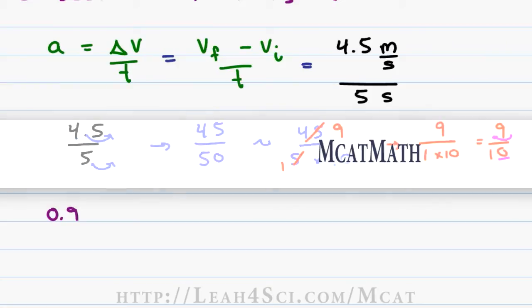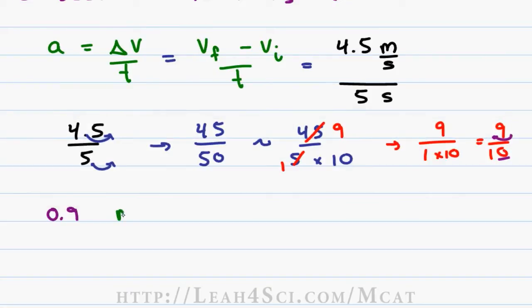Now let's take a look at the units. Velocity was given in meters per second and time was given in per second because it was in the denominator. That means our units are now meters over second times second which is really meters per second squared, the unit for acceleration giving us a final answer of 0.9 meters per second squared.